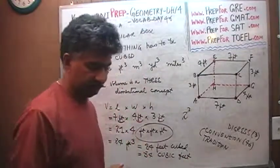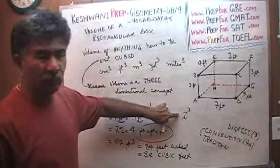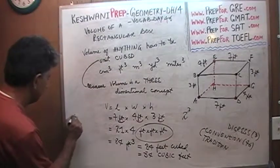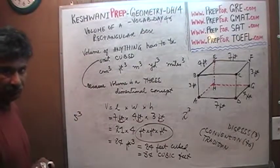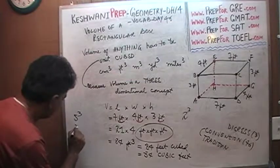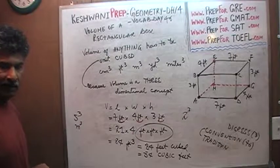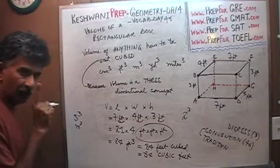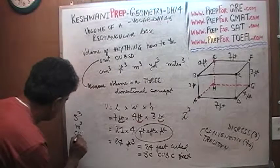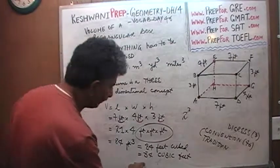So this is 84 cubic feet. Volume of anything, it doesn't matter what it is — because it is always a three-dimensional concept, that's what volume is. What does it mean when you say volume of something? Volume means how much stuff you can put in it. How much stuff you can put in something means that thing has to have some depth, some width, and some length. It is a three-dimensional concept.